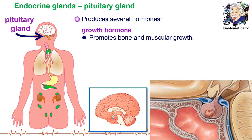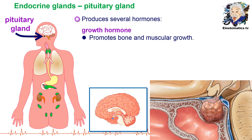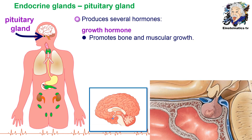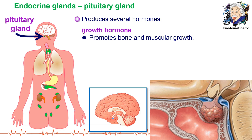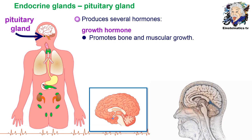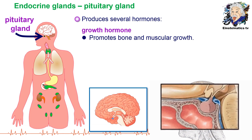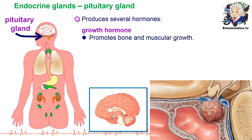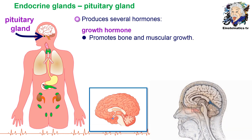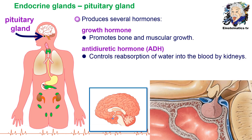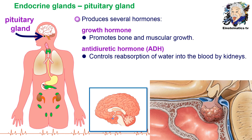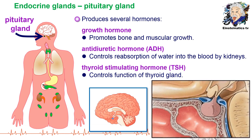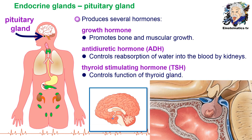The growth hormone promotes bone and muscular growth. As mentioned earlier, too much or too little of a hormone has effects — for example, excess growth hormone can produce a condition called gigantism, while a deficiency can produce dwarfism. The pituitary gland also produces the antidiuretic hormone (ADH), which controls reabsorption of water into the blood by the kidneys, and another hormone which controls the function of the thyroid gland.